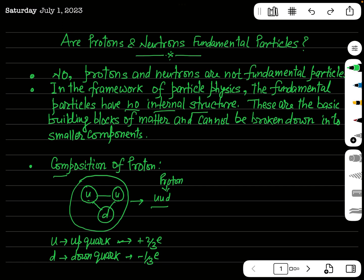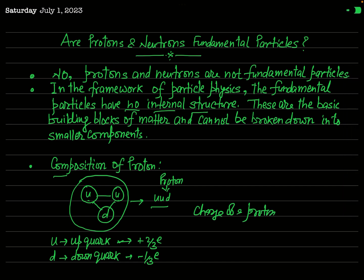So if you want to find the charge of a proton, whose structure is UUD, its charge will be equal to the charge of the first up quark (two-thirds E) plus the charge of the second up quark (two-thirds E) plus the charge of the down quark (minus one-third E). You can verify by algebra that this equals positive E.